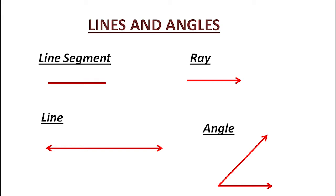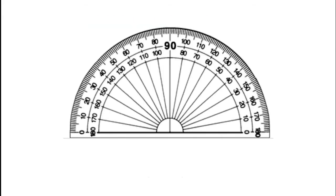Next is angle. An angle means two rays having a common endpoint. That common endpoint is called the vertex, and the two rays are called the arms of the angle. We use a protractor to measure an angle.